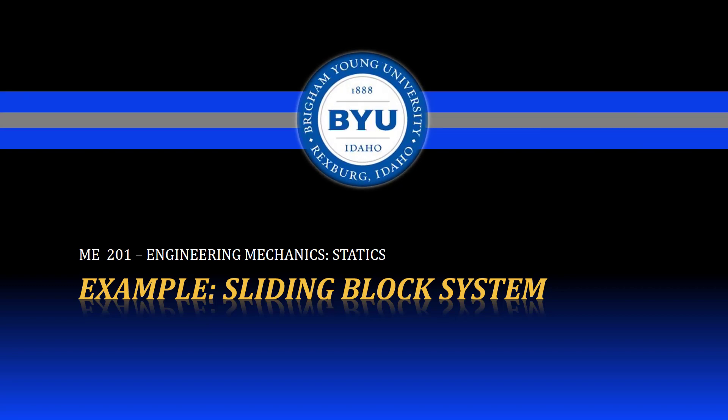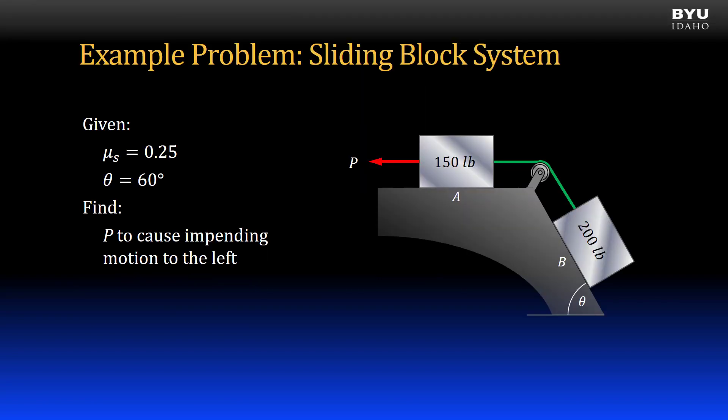Welcome to statics. In this sliding block system example, we have two blocks: one on a horizontal plane and one on a plane inclined at 60 degrees.